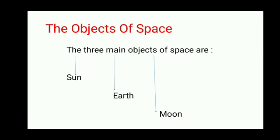The Sun is 109 times bigger than Earth. Earth is 50 times bigger than the Moon. So we can say that the Moon is the smallest of all three, and the Sun is the biggest of all three.